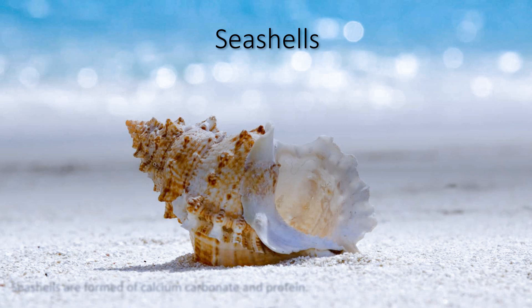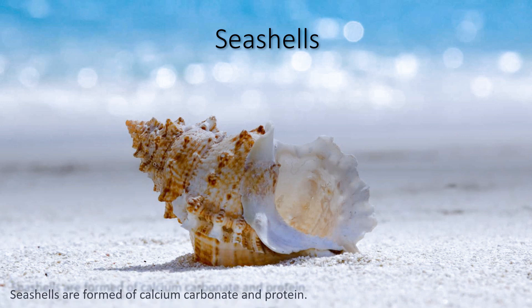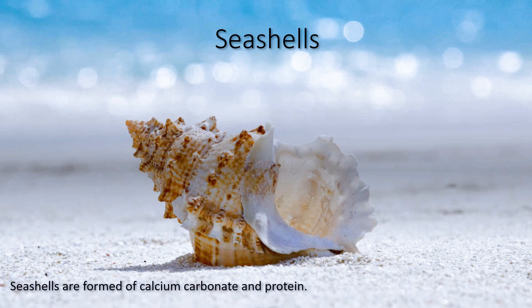Today we talk about how seashells are formed. A seashell is a protective outer layer created by any animal that lives in the sea. Seashells are mainly composed of calcium carbonate; they also have protein, which is only two percent. They are commonly found in beach drifts.